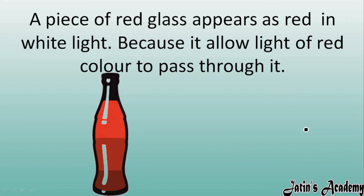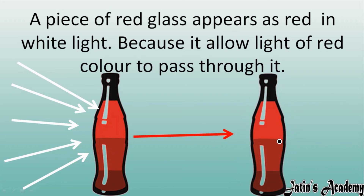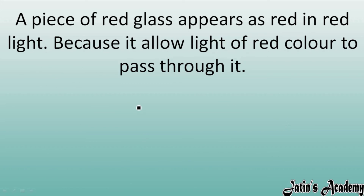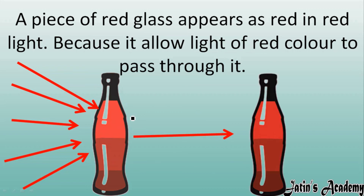Next, a piece of red glass kept in white light — white light having a mixture of seven colors — will selectively reflect red color, so we see the bottle as red. When red glass is struck with red light only, it reflects all the red light and we are able to see it as red in color.